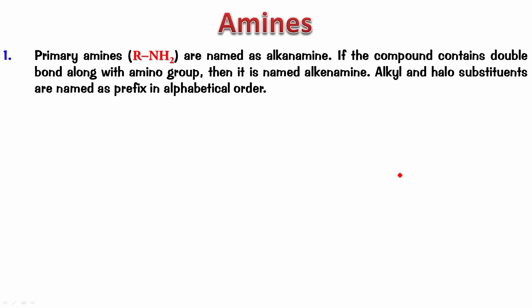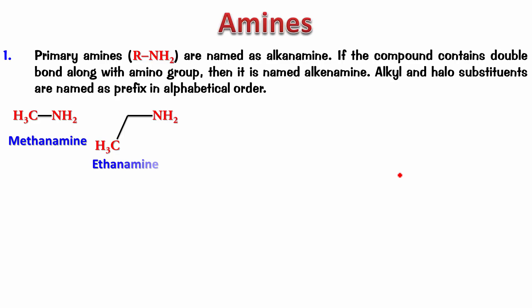Let's see a couple of examples. Try and name this one — pause the video and name it, then play it back. This is from methane, right? Methane-amine — methanamine. Let's check the next one. Well, ethane-amine — ethanamine. No need to number it because there are only two carbon atoms and N has to be attached to any one of them, so there's no point in numbering here.